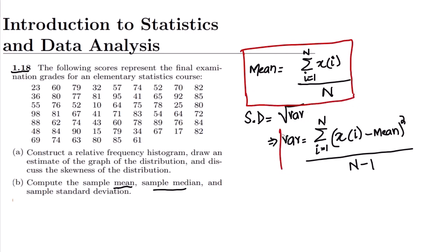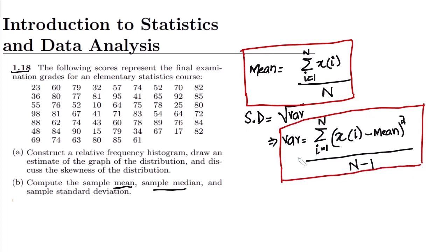We can find the standard deviation by taking the square root of the variance. We have done this in our previous question, but here the number of data points is greater, so it is more feasible to use a programming environment with packages. Therefore, in today's lecture we are not going to solve this question by hand — we are going to solve it with the help of Python.